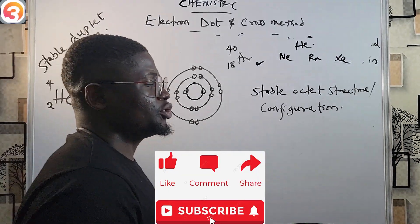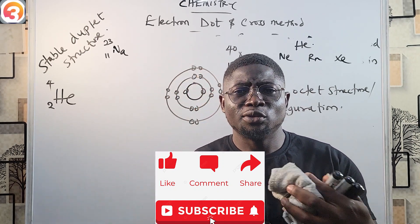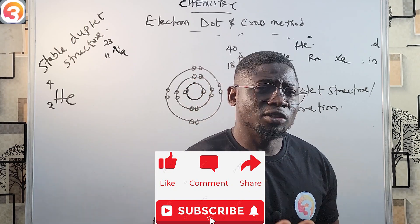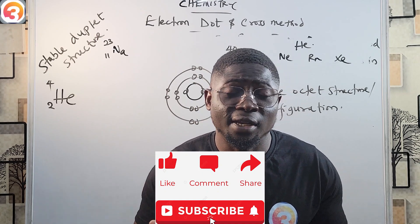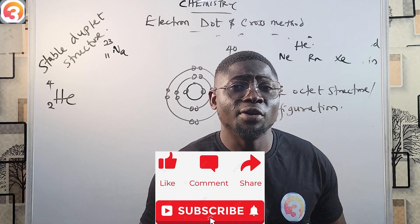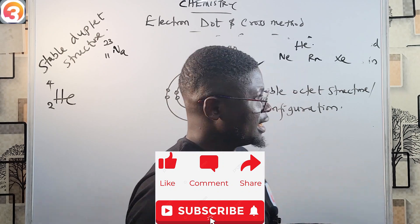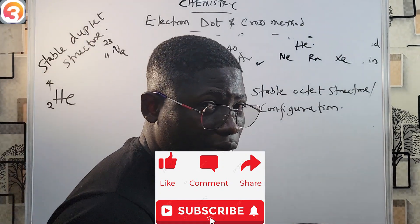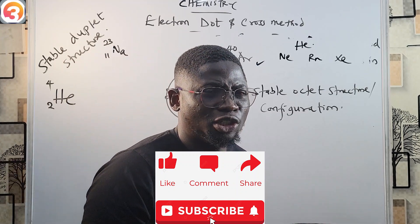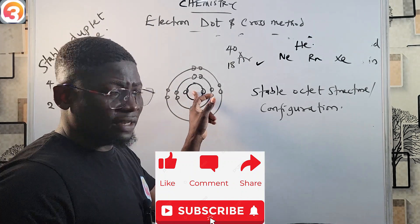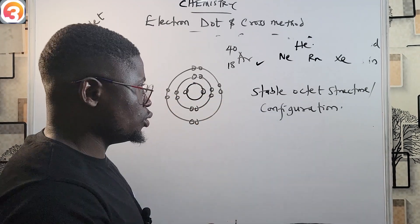To go over this again: in the electron dot and cross method, we draw rings to represent shells or orbitals, then fill them with electrons drawn as crosses or dots. We saw the electronic configurations of sodium and chlorine. Structures like these help demonstrate chemical bonding and show bond formation between atoms. The first ring accommodates 2 electrons and the next can accommodate 8, and so on. Before you go, please like, subscribe, and share this video.